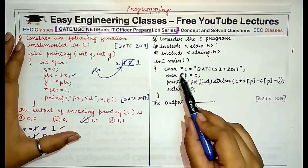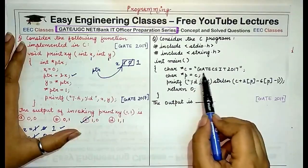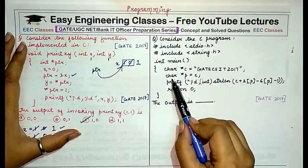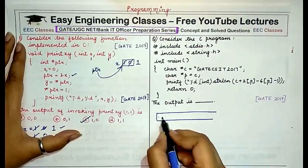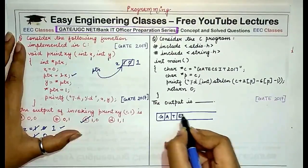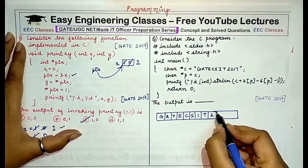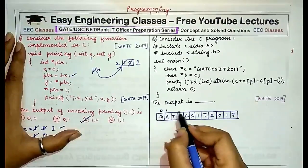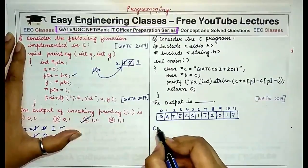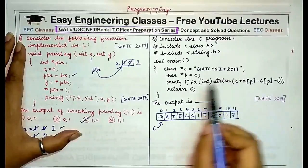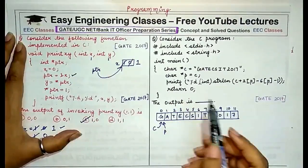Now the second question states that in the C program there is a character array pointed to by c, containing the string "gate cs it 2017". There is another character pointer p which is also assigned the value of c. If we draw this array, c is pointing to the starting location of the character array, and p is also pointing to that same starting address.